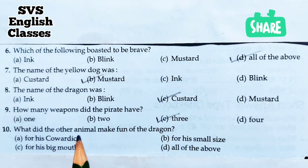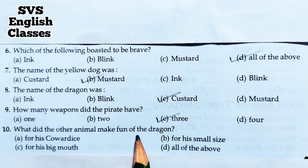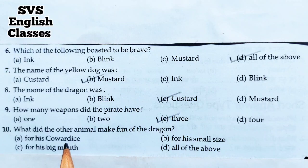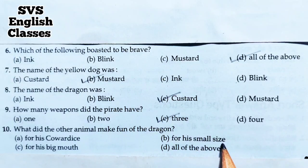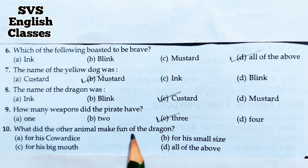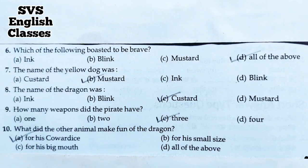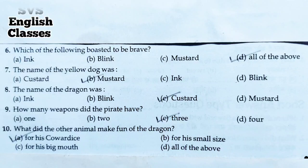Number ten: What did the other animals make fun of the dragon for? अन्य जानवर ड्रैगन का किस चीज़ के लिए मज़ाक बनाते थे? A. For his cowardice (कायरता के लिए), B. For his small size, C. For his big mouth, D. All of the above. The animals made fun of the dragon for his cowardice. So the correct option is A. These were our multiple choice questions.